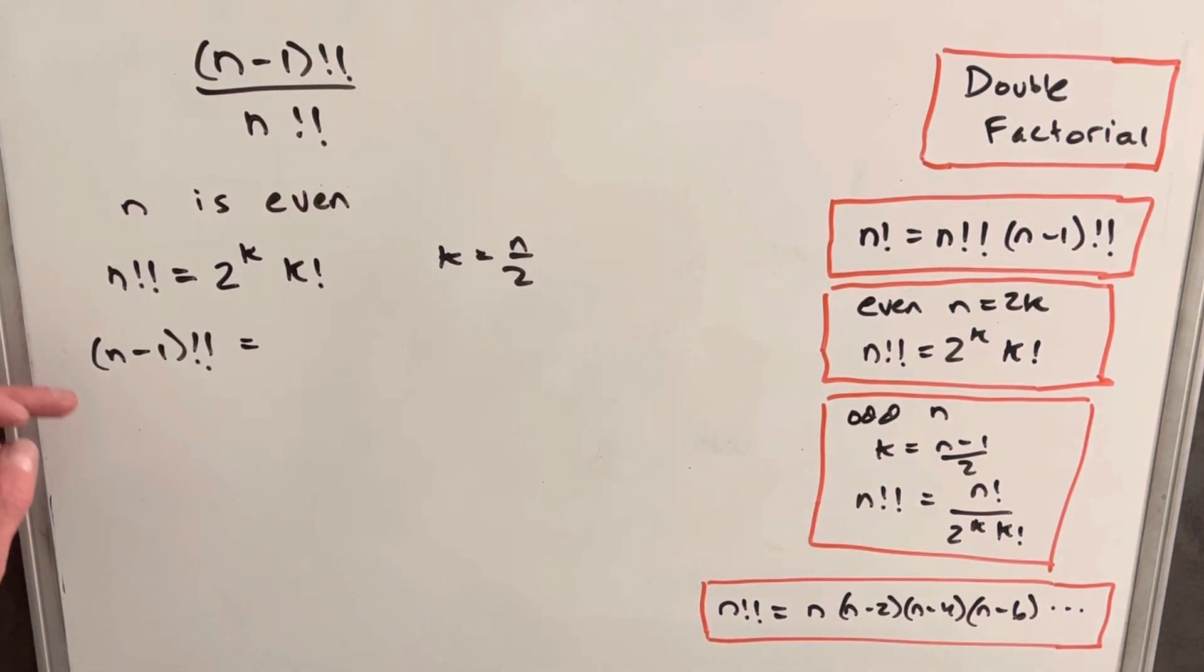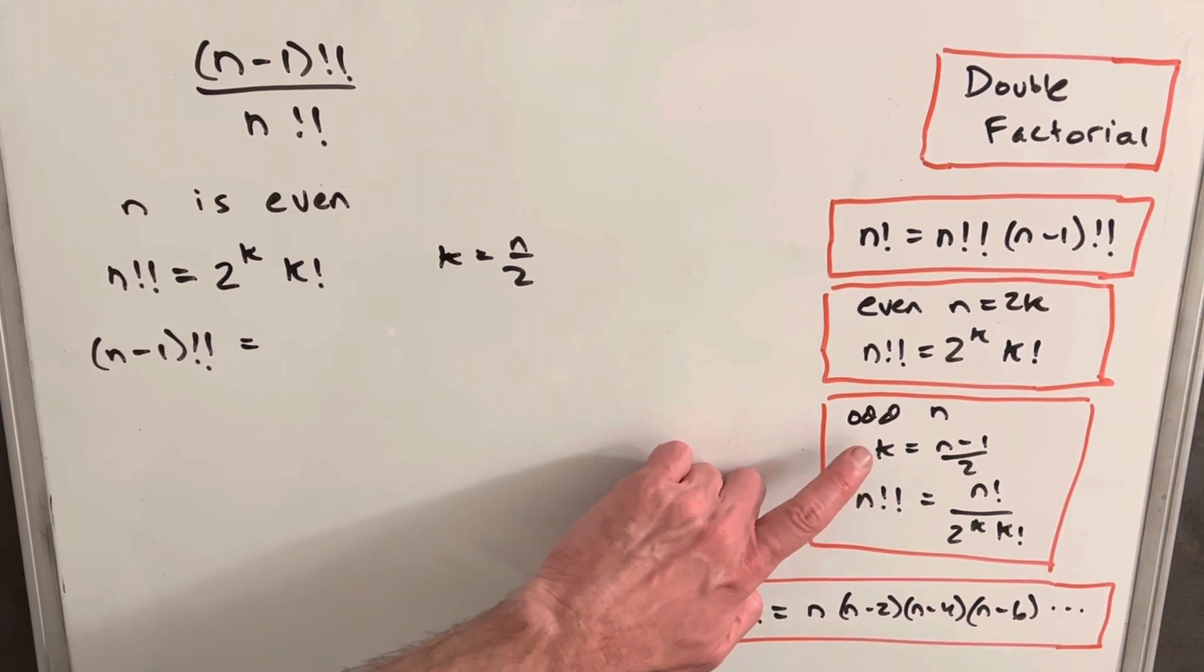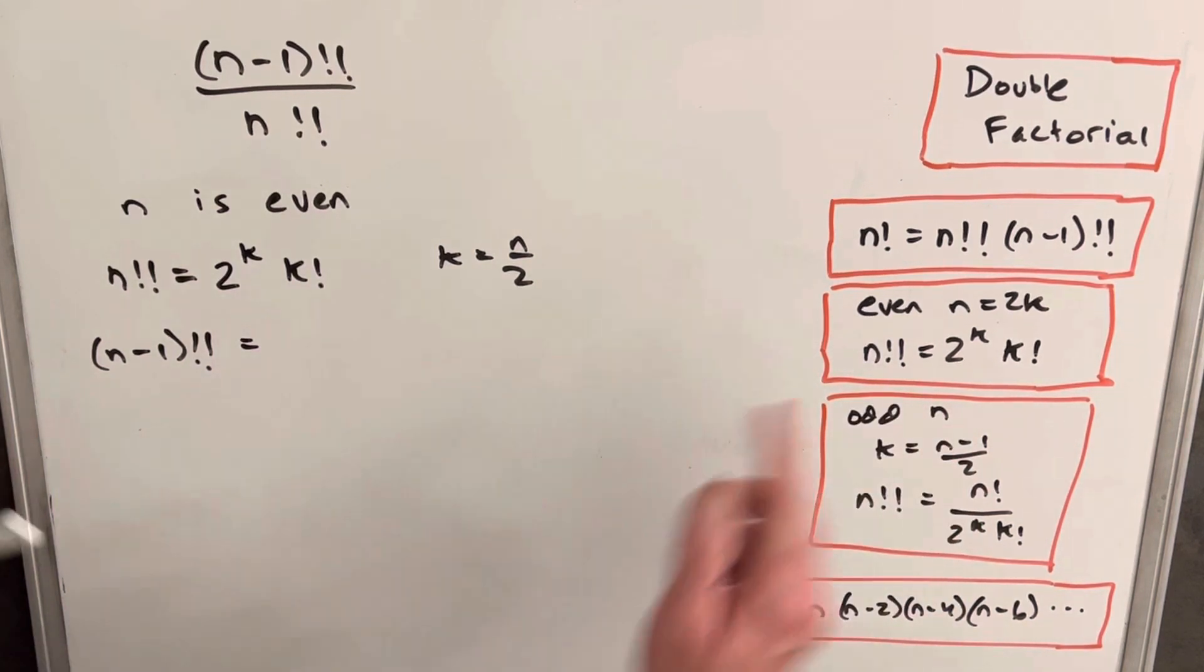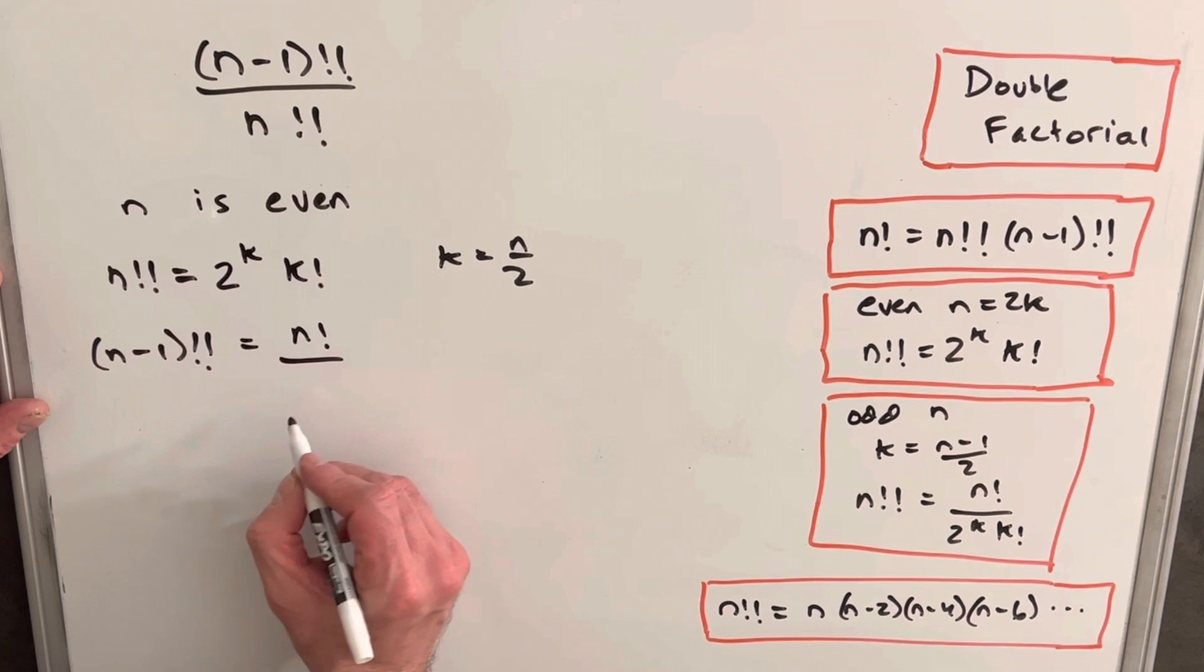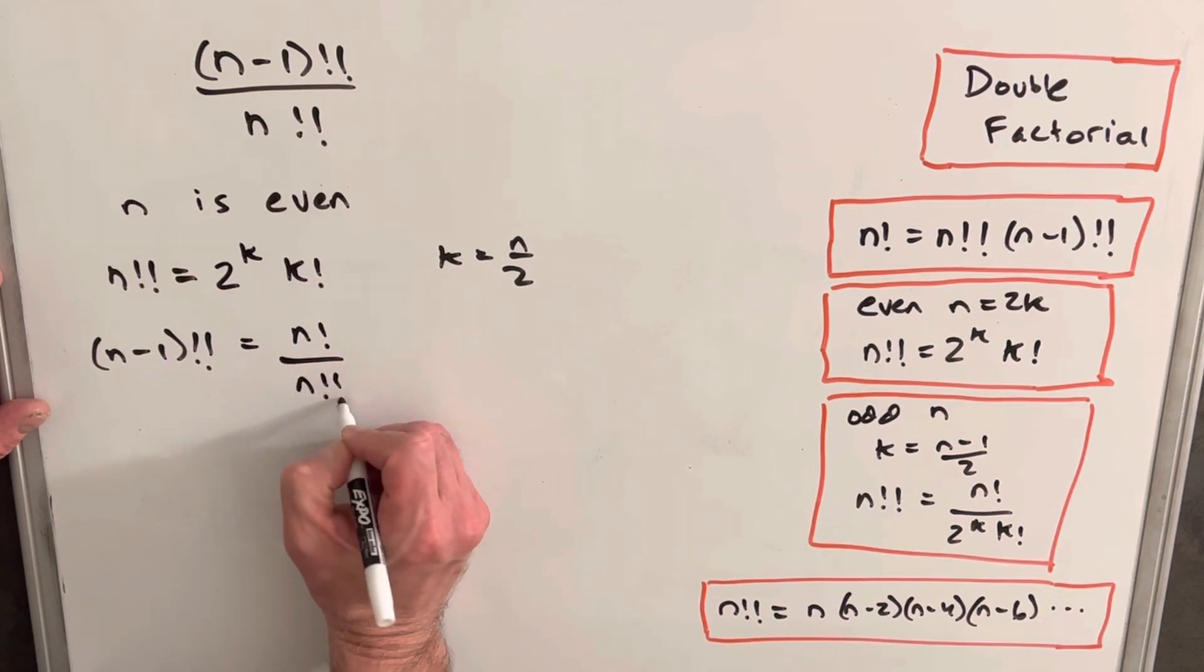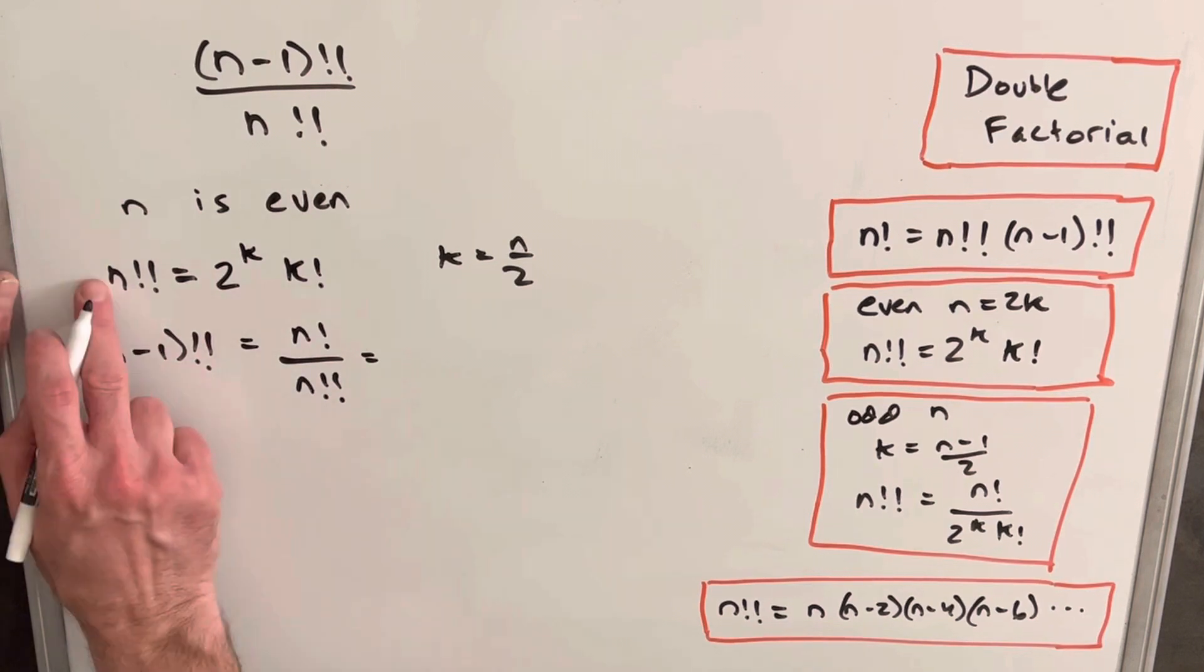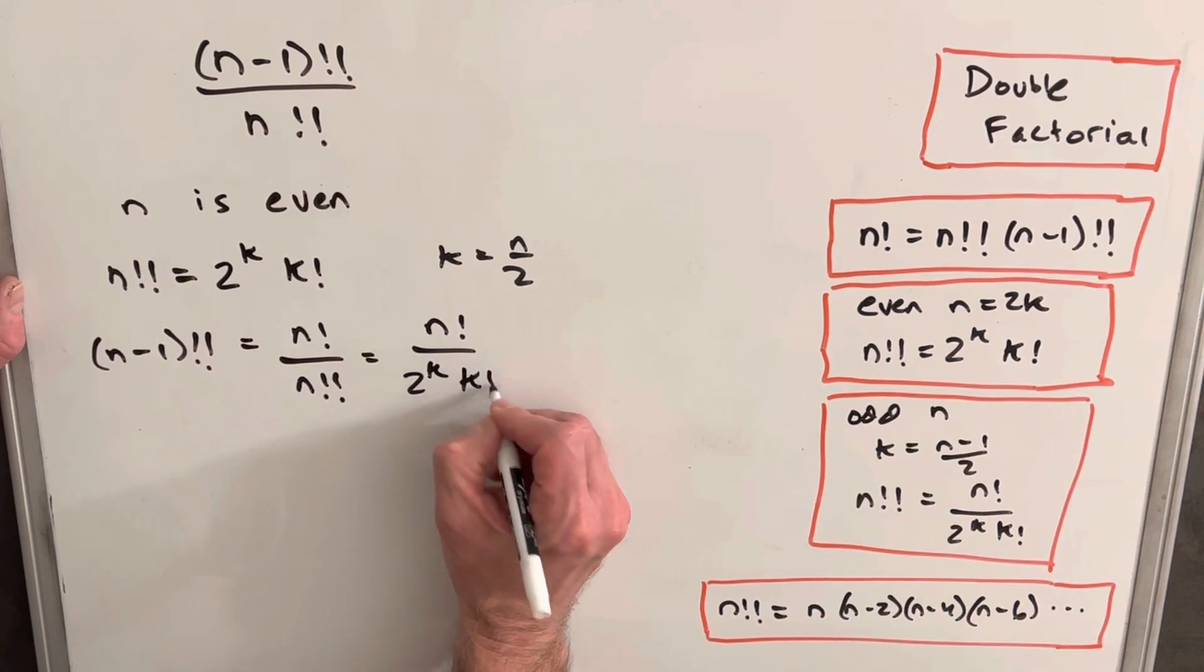Okay, and then for n minus 1 double factorial, we know n minus 1 must be odd if n is even. But instead of using our formula for the odd n, just because I don't want to confuse the different k's with a different definition, let's use the first formula. If we just divide by n double factorial here, we have n factorial over n double factorial from the first formula. But actually, we just found this value right here, so we know what this is going to be. It's going to be 2k k factorial.